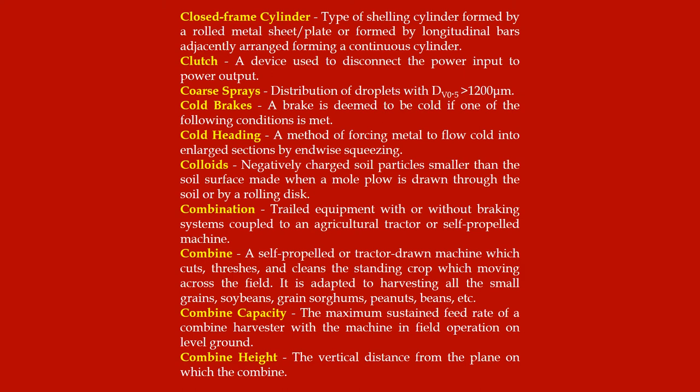Combination trailed equipment: equipment with or without breaking systems coupled to an agricultural tractor or self-propelled machine. Combine: a self-propelled or tractor drawn machine which cuts, threshes and cleans the standing crop while moving across the field; it is adapted to harvesting all the small grains, soybeans, grain sorghums, peanuts, beans, etc.